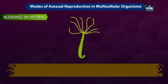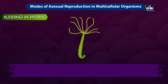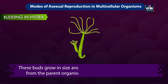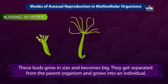Budding in multicellular organisms: Hydra can reproduce by another asexual method called budding. Hydras have regenerative cells in their bodies. They use these cells to produce small buds on their bodies. These buds grow in size, get separated from the parent organism, and grow into individual organisms.